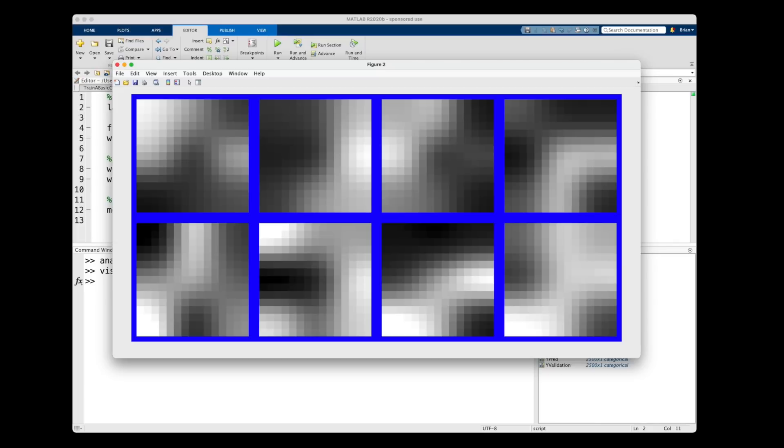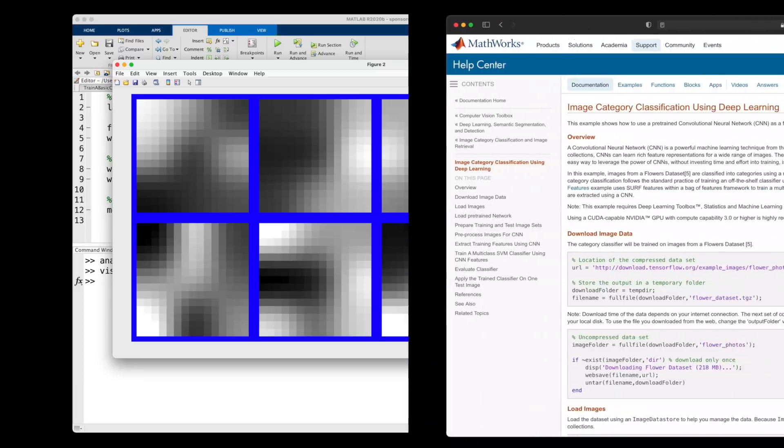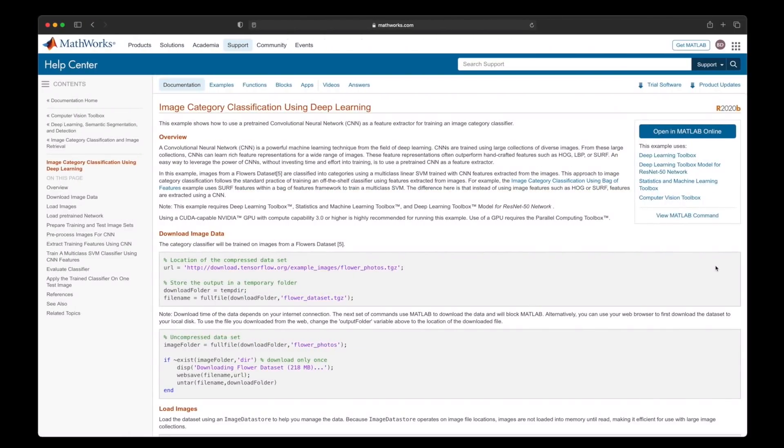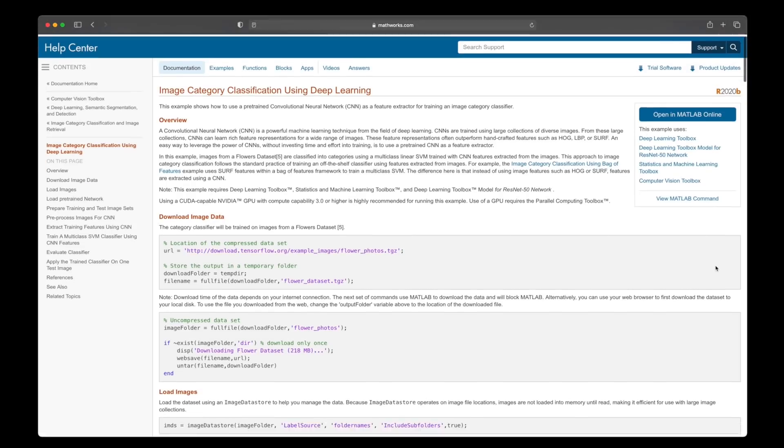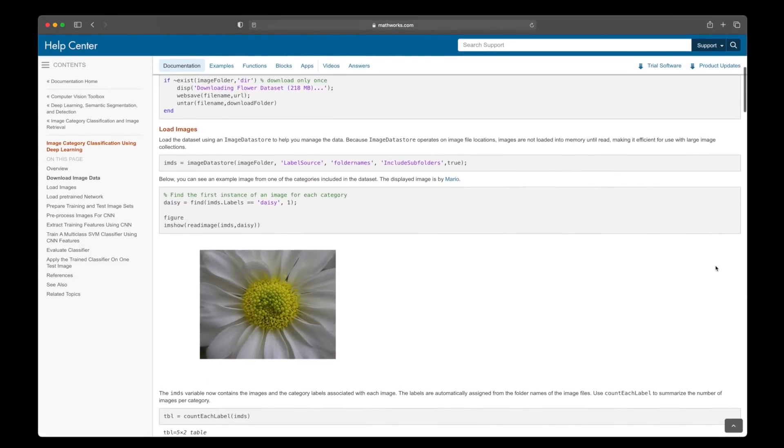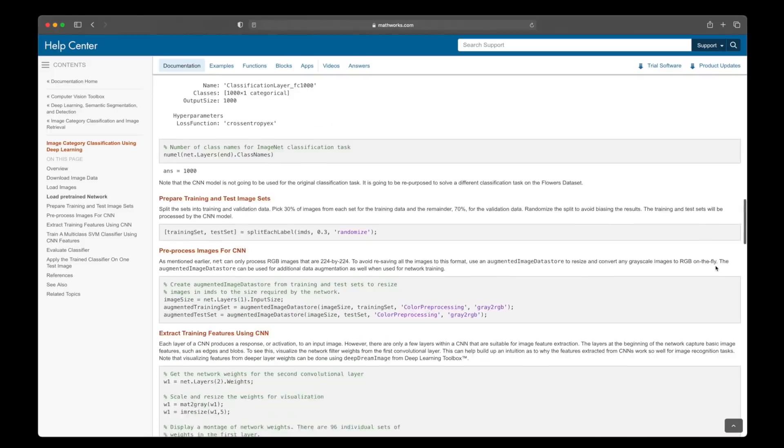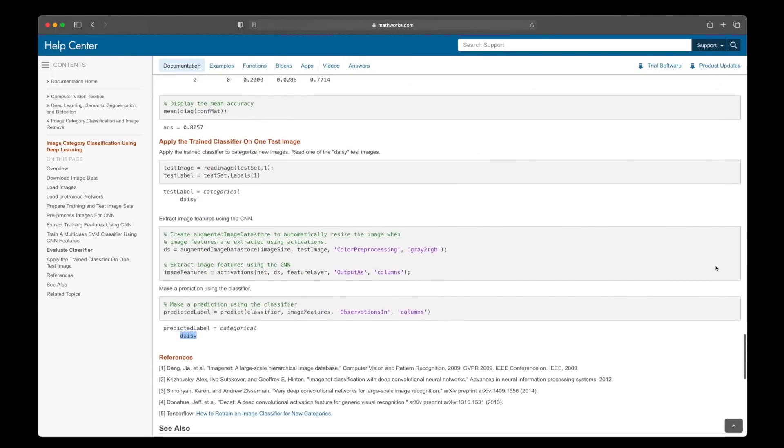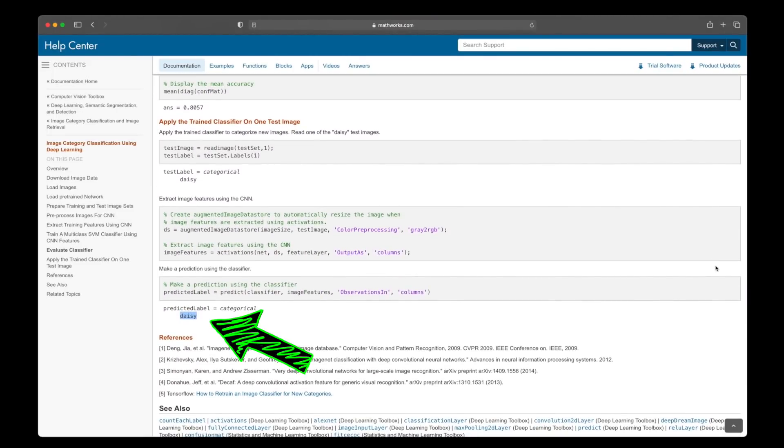Now, there isn't a whole lot of interesting detail in these low-resolution black and white images. But we can do the same thing with a network that has been trained to recognize flowers within larger color images. To see this, let's look at the MATLAB example image category classification using deep learning. The input image is a daisy. And if you apply the trained classifier on this test image, it does, in fact, return the label daisy.